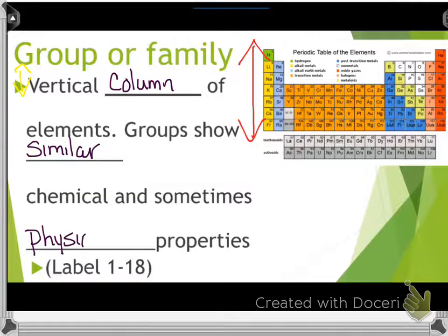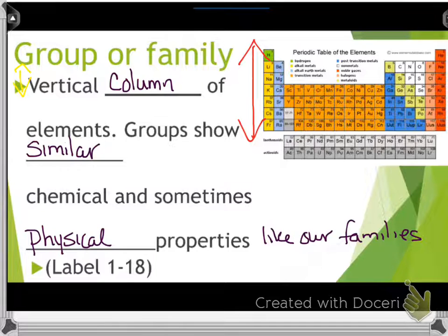Groups show similar chemical and sometimes physical properties, like our own families. If you have blonde hair and your mom has blonde hair, that's a physical characteristic you share. Chemical characteristics are a little bit different for us to say we share with our families, but we do when you talk about DNA and stuff. In an up and down column, the ones above and below whatever element you're talking about, they have similar characteristics, and that's why they're in those families and they are where they are on the table.